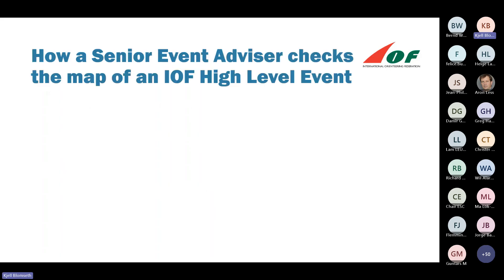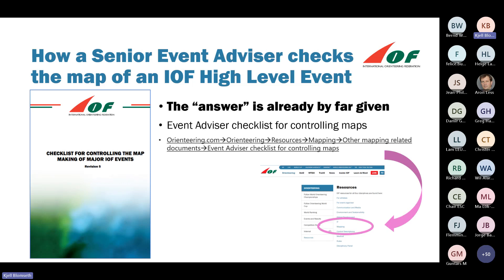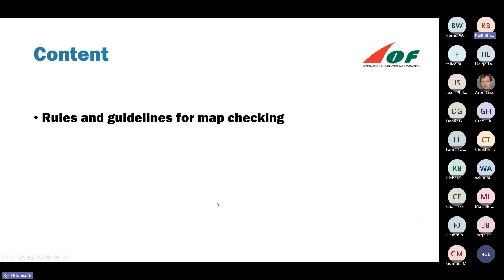How does a senior event advisor check the map? The answer is already largely given, because there's a document called the event advisor checklist for controlling maps, which you can find far down on the mapping pages at the IOF. So there's not a big need to go through that document — it's good. But as I already said, the FUTO Commission asked me to talk about rules and guidelines, and I would do that.